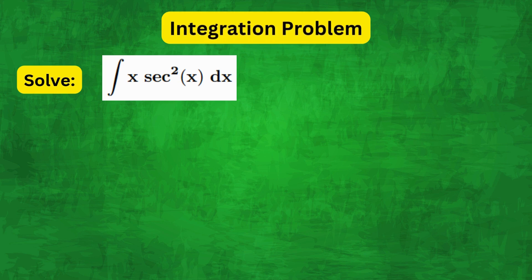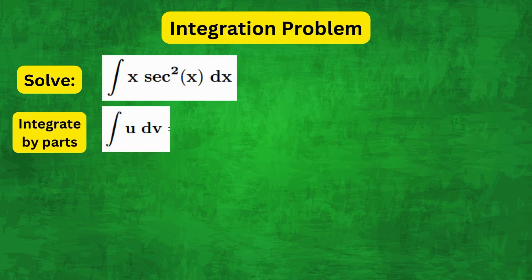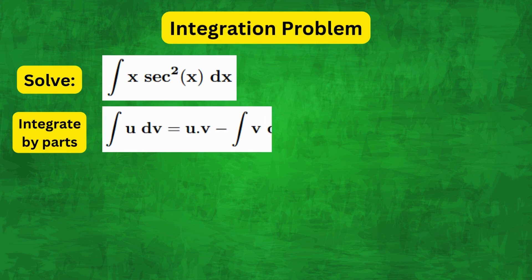The first thing we need to do is recognize that x sec²(x) is a product of two functions of x. Therefore, we can use integration by parts, which is given by the formula ∫u dv = uv - ∫v du.